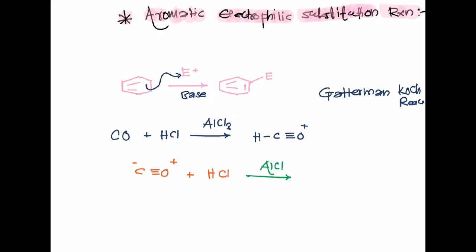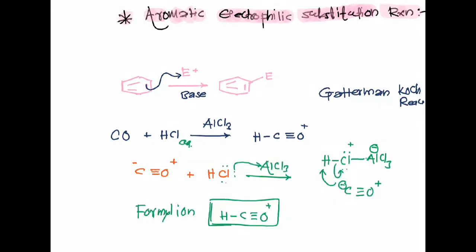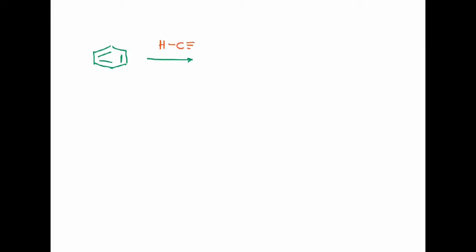Why do we use AlCl3 instead of directly using HCl? Because in aqueous conditions, hydrochloric acid's acidity is neutralized, and in the gaseous state it cannot show acidic behavior — it cannot easily give a proton. So we react with a Lewis acid. Benzene then reacts with the formylium ion, HC≡O+, which is your electrophile.